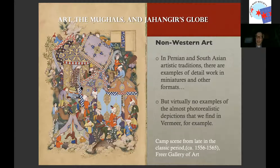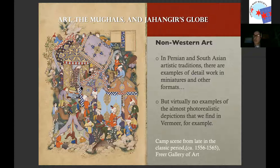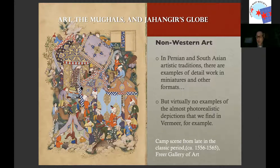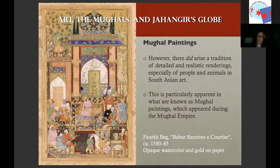In Persian and South Asian artistic traditions, we have an almost in-between style, because there are examples of very detailed renderings in Persian miniature art. But again, we don't typically see the kind of photorealism we would see in Vermeer. These Persian and South Asian artistic traditions have wonderful renderings, but they're not really examples of accurate renderings of objects. However, there did arise a tradition of very detailed and realistic renderings, especially of people and animals, in South Asian art in the Mughal tradition.